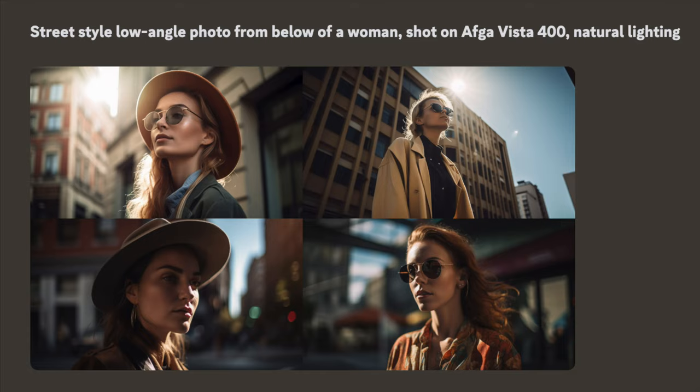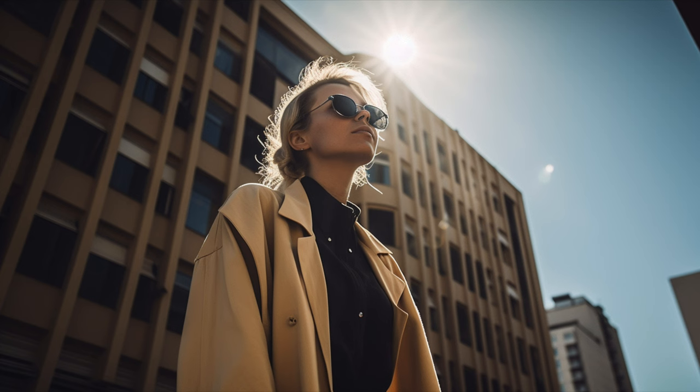In this first example, we're showing how to get a low angle shot of a woman on the street. Nick Pierre suggested adding 'from below' to the prompt to reinforce the command so that MidJourney really gets it right. Here are a couple of samples where you can see the low angle shot — it's really spot on.